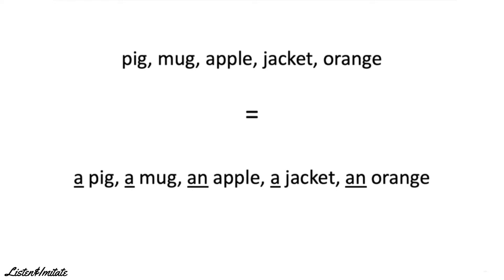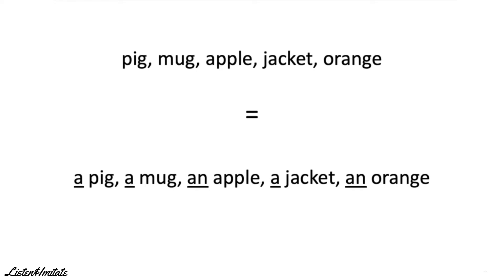We use an indefinite article to talk about something for the first time. Often we use an indefinite article first, then follow it with the definite article the. For example: I saw a cat. The cat was black and white. In the first sentence, we mention the cat for the first time — the listener might not know what cat I am referring to. In the second sentence, we mention the cat for the second time, so we use the definite article the.